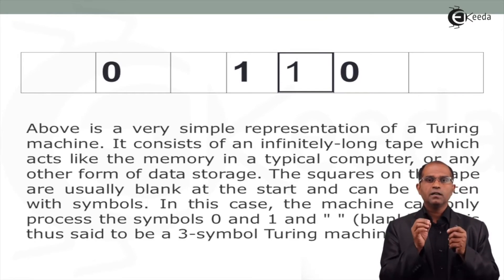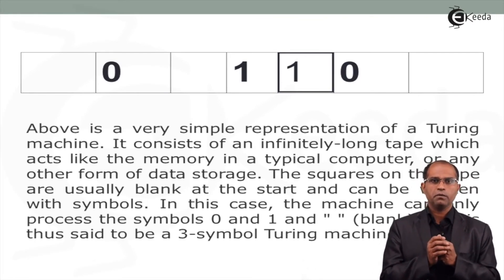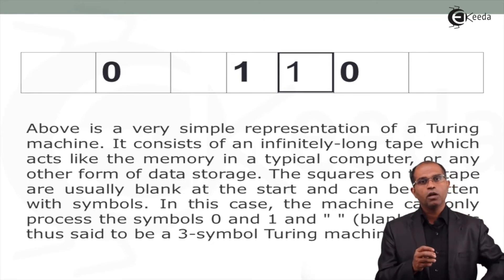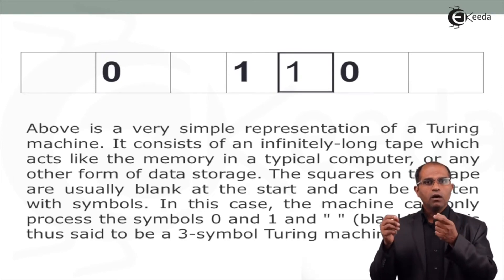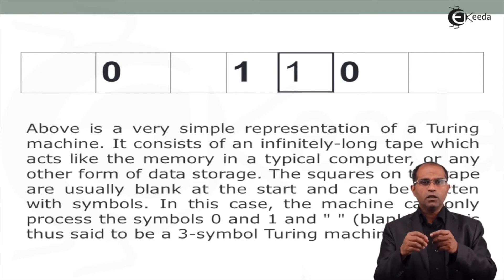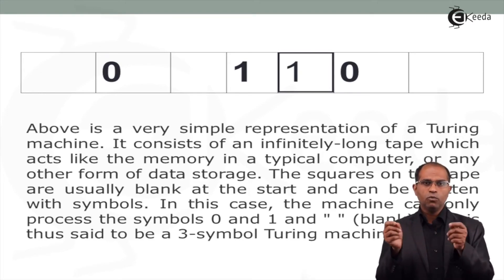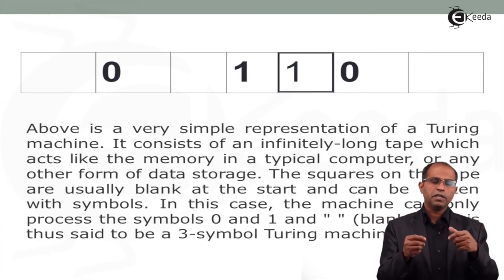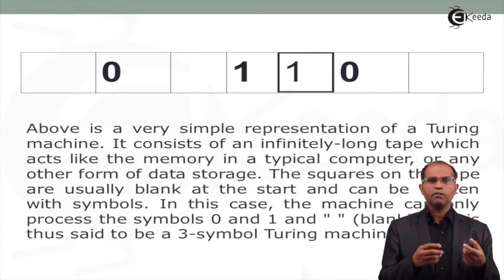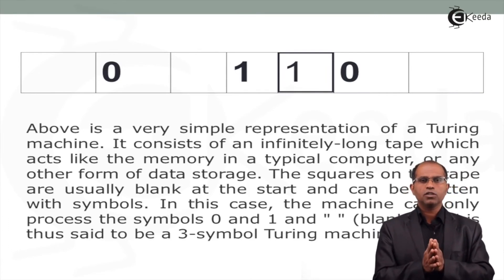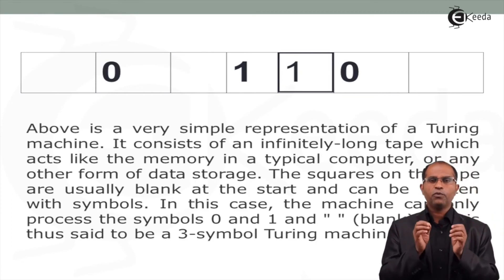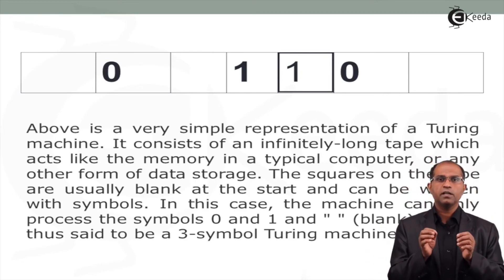Since the tape stores three unique symbols — 0, 1, and blank space — this is called a three-symbol Turing machine. You convert your program into blocks, store them on the tape, and then read, write, or edit the tape contents. Different programs can work on the same set of data to deliver different outputs.